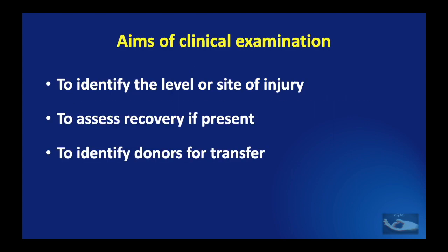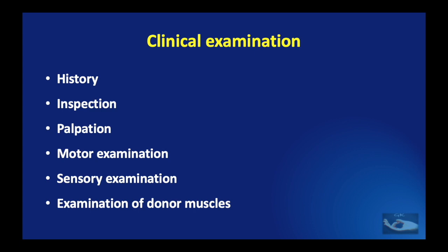The aims of clinical examination are to clinically assess the radial nerve palsy by identifying the level or site of the injury, to assess recovery if present, and to identify donors for transfer. As in all clinical examination, we shall start with the history, then the inspection, palpation, motor examination, sensory examination, and in case of radial nerve injury we shall be dealing with the examination of donor muscles.